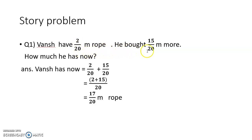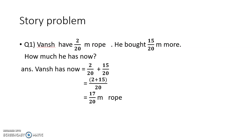Let me move to a story problem. Once has 2 out of 20 metres of rope. He bought 15 out of 20 metres more. How much does he have now? We need to find the total, so we add: 2 upon 20 plus 15 upon 20. Add the numerators, denominator stays 20. So 2 plus 15 gives us 17 upon 20 metres of rope.